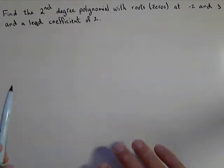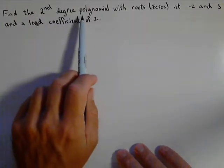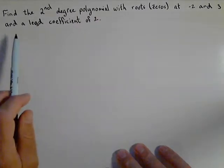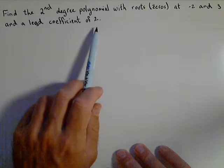This is gonna be a quick little video about how we can find a second degree polynomial with roots or zeros at negative two and three and a lead coefficient of two.